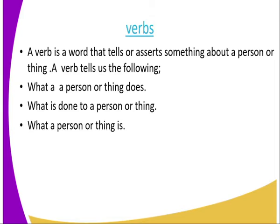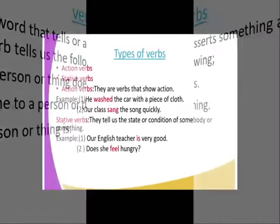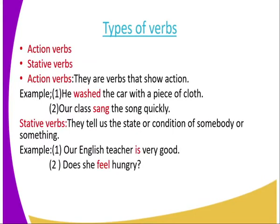A verb tells us the following: what a person or thing does, what is done to a person or a thing, and what a person or a thing is. We have two types of verbs — action verbs and stative verbs.